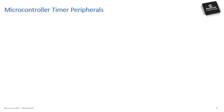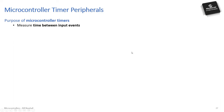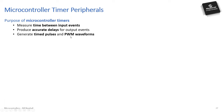Microcontroller timer peripherals: when you think of a timer you think of seconds or minutes, but microcontroller timer peripherals operate at microsecond or sub-microsecond resolution. Their purpose is to measure time between input events or produce accurate delays for output events — timing digital pulses, implementing pulse-width modulators, and real-time clocks, which have about one-second resolution on a human time scale.